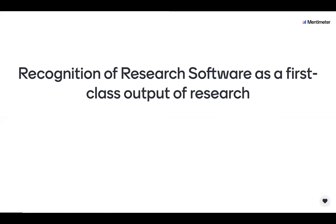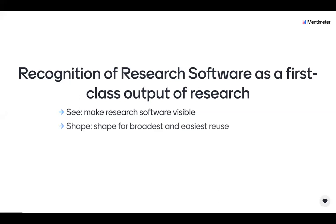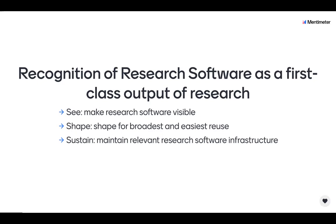The agenda defines a set of actions to address a single change: recognition of research software as a first-class output of research. These actions are grouped under three abstract and high-level aims — to see research software by making it visible, shaping research software for broadest and easiest reuse, and sustaining research software by maintaining relevant research software infrastructure. More detail is available in the agenda document at bit.ly/rs-agenda.